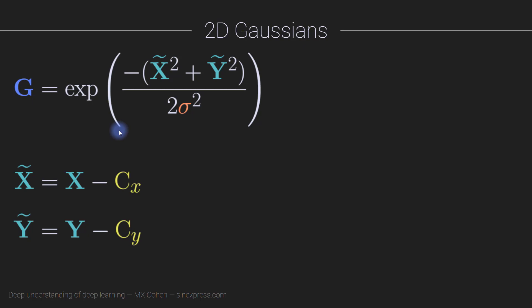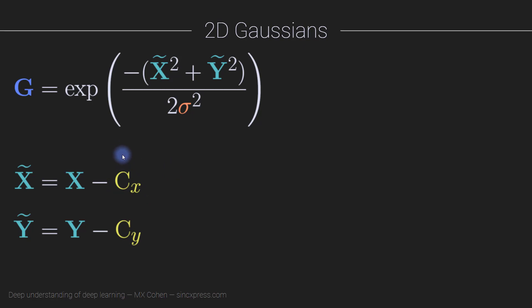We're going to simulate our own image data according to specific formulas, then use a deep learning model to estimate the original generative parameters as accurately as possible. I'm a huge fan of simulating data to evaluate and develop data analysis methods because it gives us full control over all characteristics of the data, including the amount of noise, and it means we have access to the ground truth. So we can quantitatively evaluate model performance — something that's generally unknown with real empirical data.